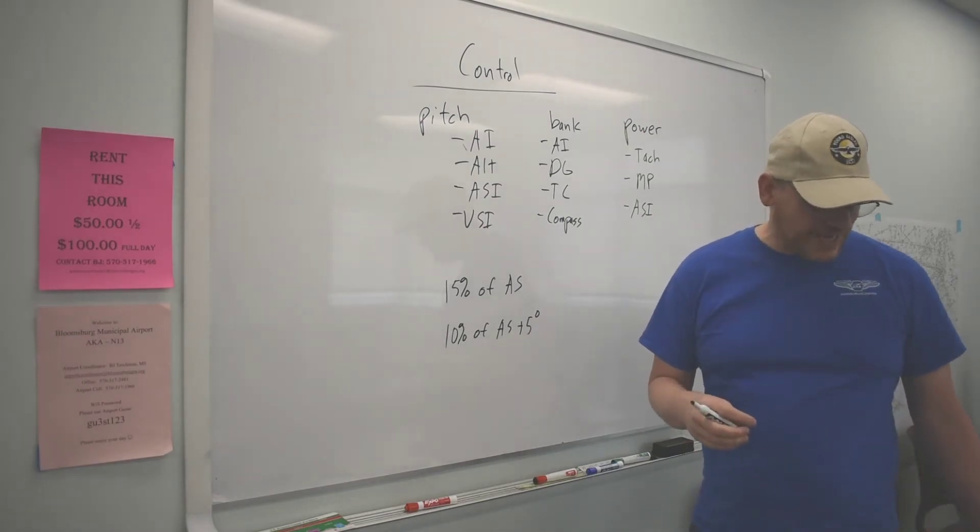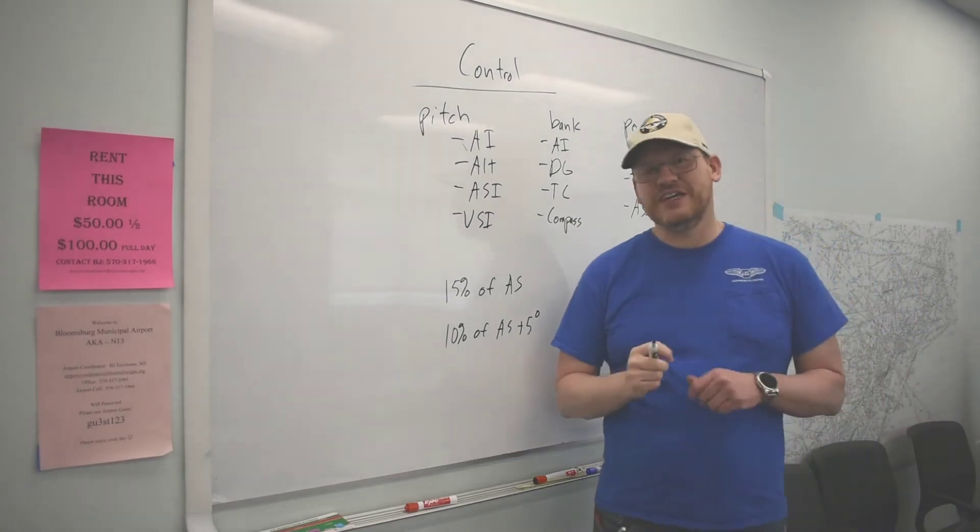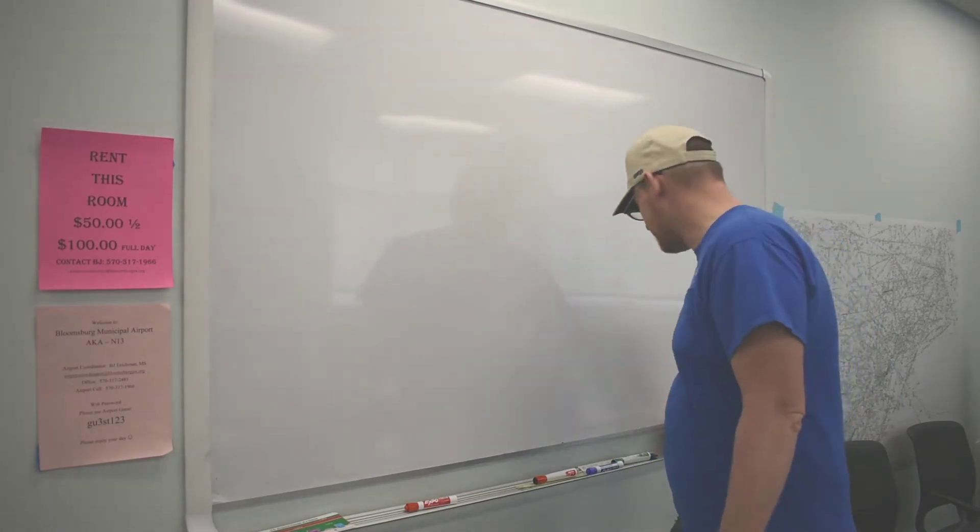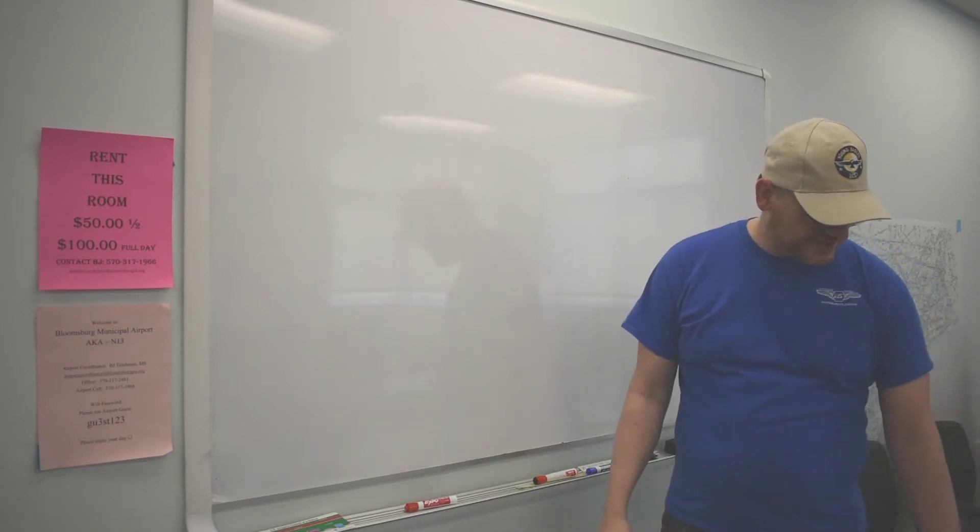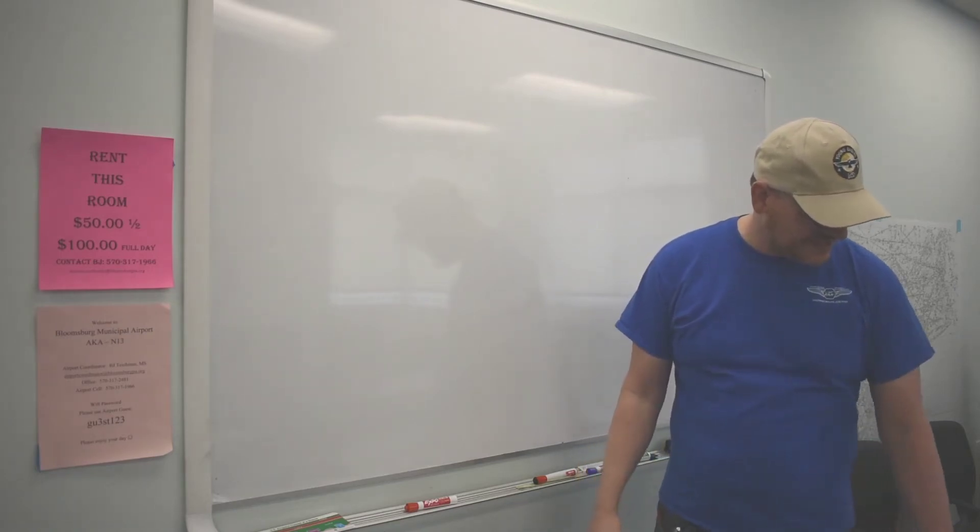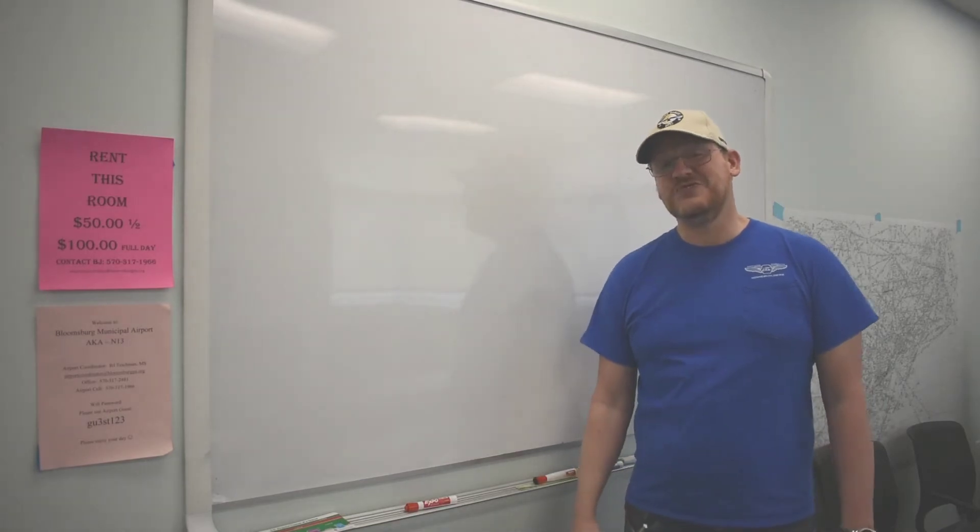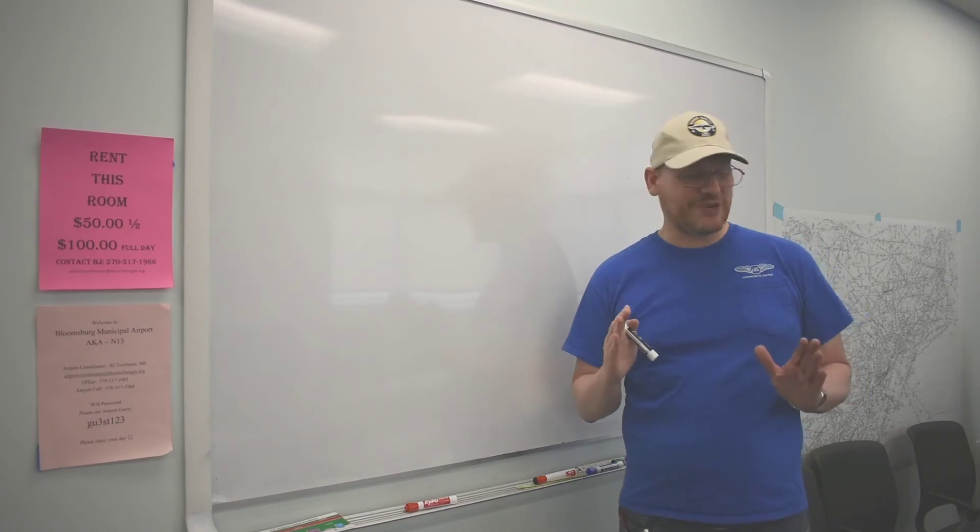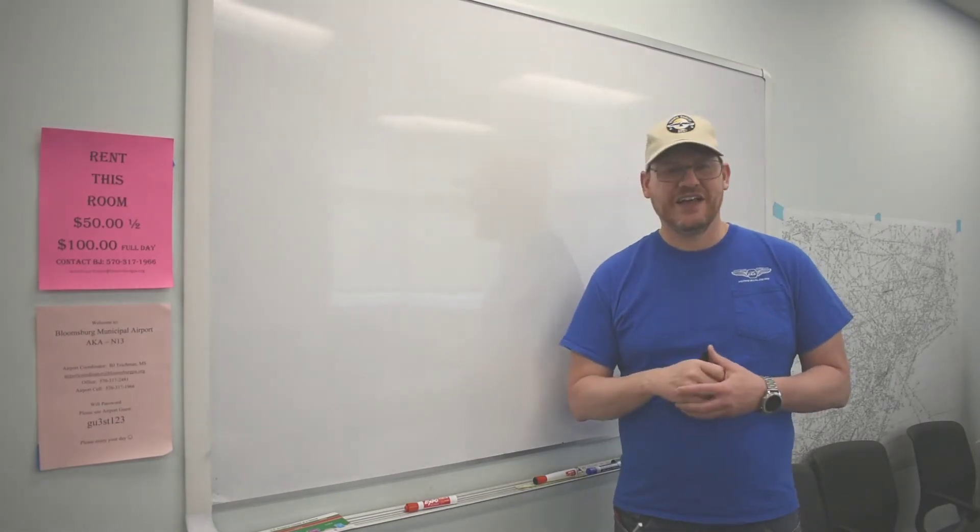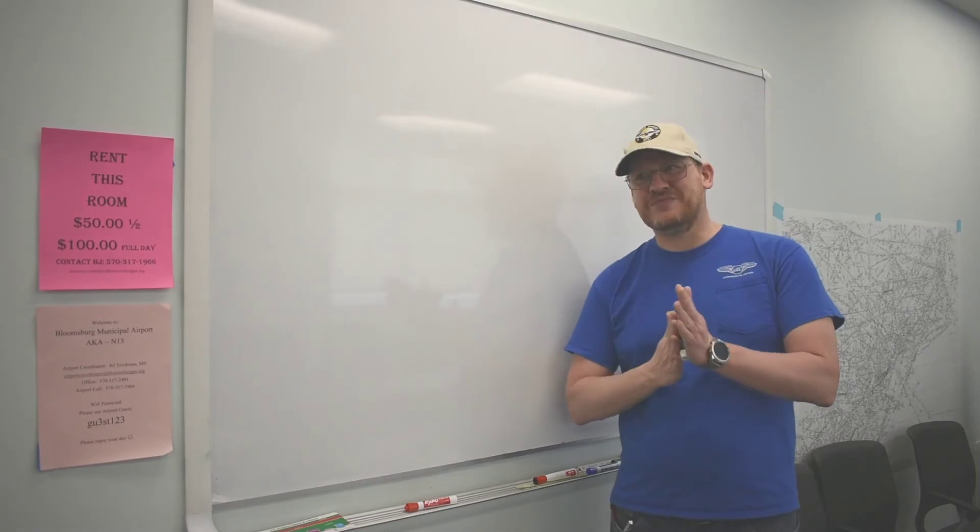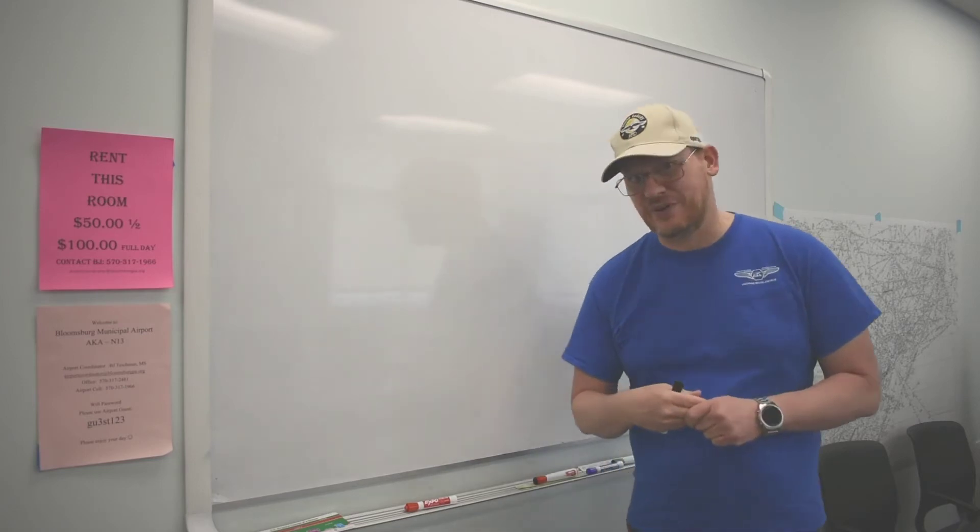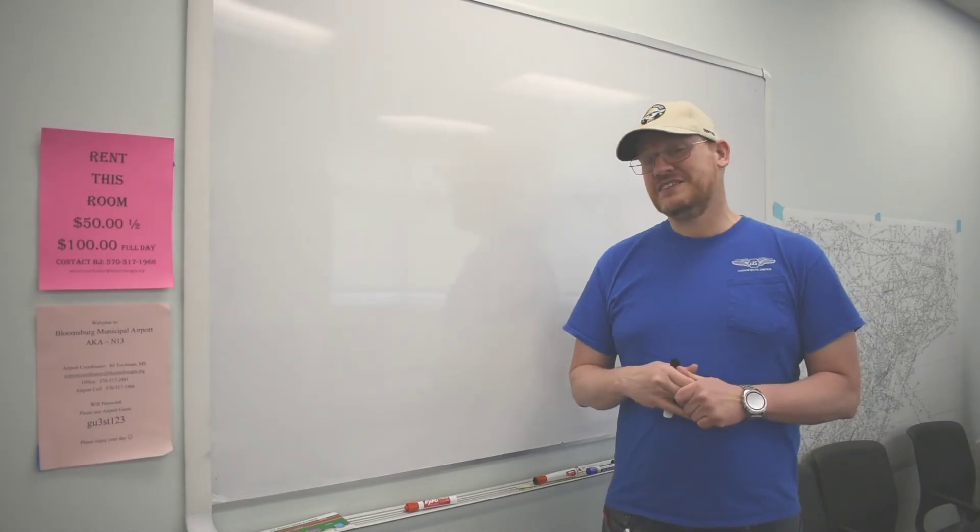Now, there's a lot that is made out of primary and supporting instruments. If you look at your book, you will see a chart that consumes all of page 310. It's figure 16. And it says, if you are doing something, here is the primary pitch, bank, and power instrument. Here are the supporting pitch, bank, and power instruments. I would recommend strongly that you spend some time with this table. This table, by the way, comes directly out of the FAA instrument flying handbook. What does that mean? Expect to see it on your test.